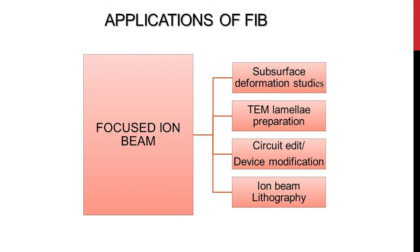What are the applications of FIB? FIB is very widely used in the materials and semiconductor industries. The main applications are subsurface deformation studies, material science, and TEM lamellar preparation for materials as well as devices. For circuit or device modification, you can modify your devices by milling or depositing material. Using ion beam lithography, you can write patterns and structures using the ion beam.